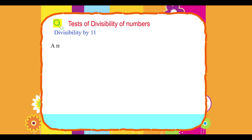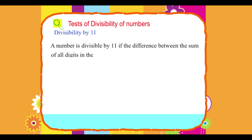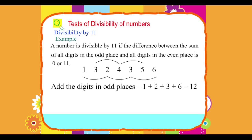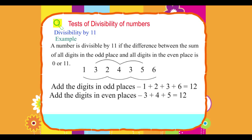Divisibility by 11: A number is divisible by 11 if the difference between the sum of all digits in the odd places and all digits in the even places is 0 or 11. Example: 1324356 — add the digits in odd places: 1 + 2 + 3 + 6 = 12; add the digits in even places: 3 + 4 + 5 = 12; difference = 0. Therefore, 1324356 is divisible by 11.